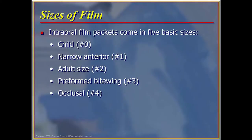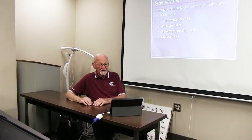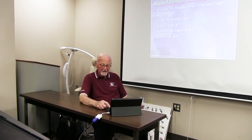The sizes of film: we have the O size, which is the child size picture. We have the narrow anterior, which is number one. We have the adult size, called number two, which is used most routinely. We have the preformed bite wing film, number three. And then occlusal film, which is number four.